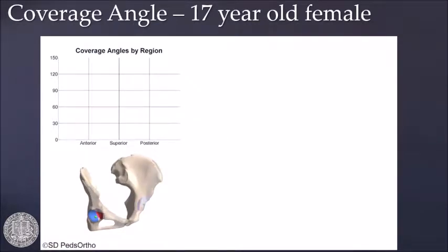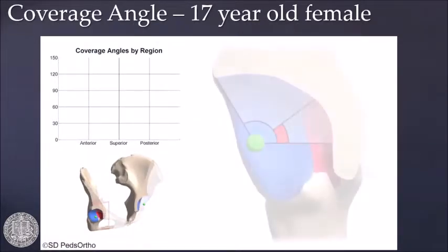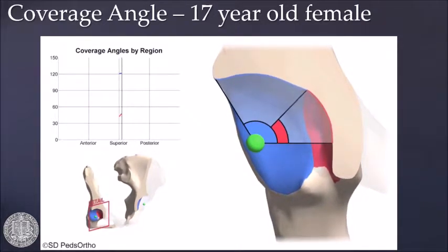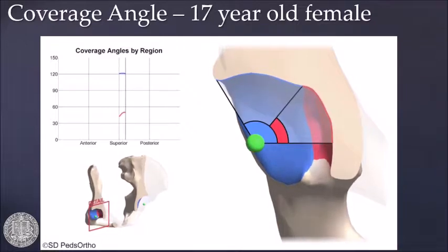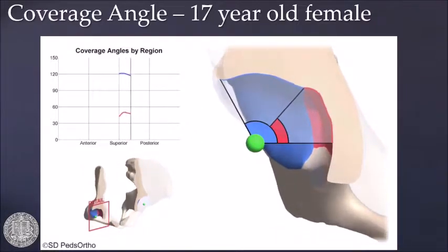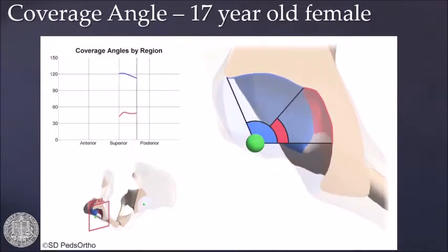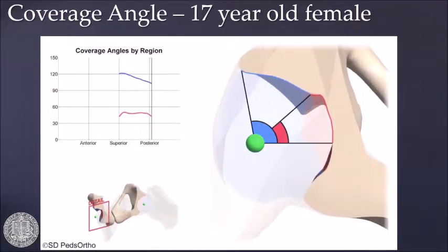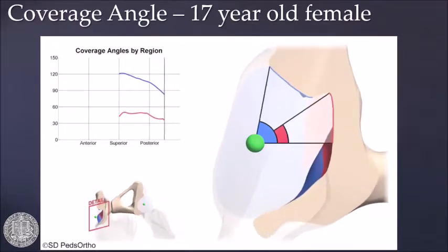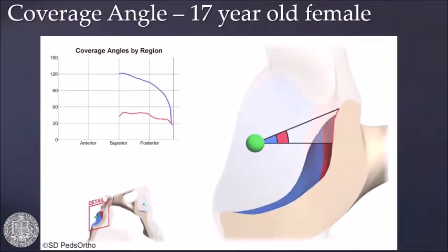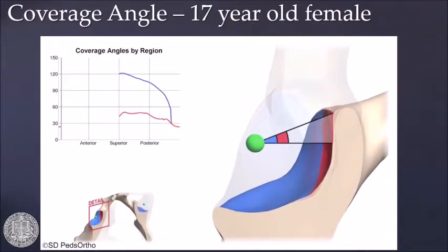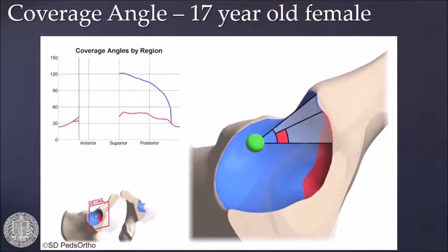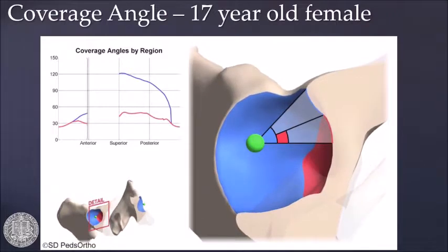This is a sample patient measuring coverage angles in a 17-year-old female. The pelvis is shown in the lower corner. If you create an axis connecting the green dots on both sides and then rotate the pelvis 360 degrees, it gives us a continuous measure of the lunate surface area in blue as well as the fossa. The chart on the top gives us these continuous measures starting superiorly, working our way posterior, inferior, anterior, and then back up to the superior.